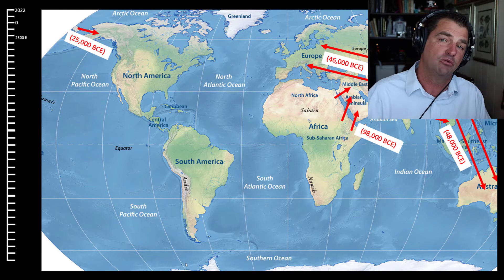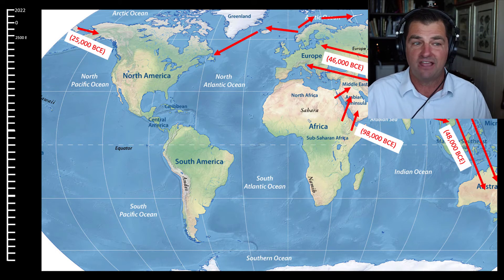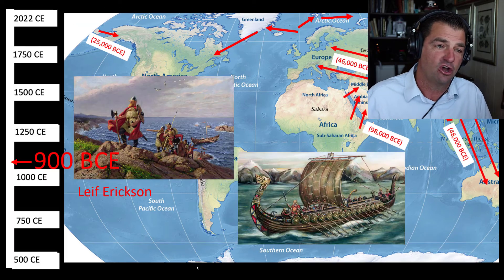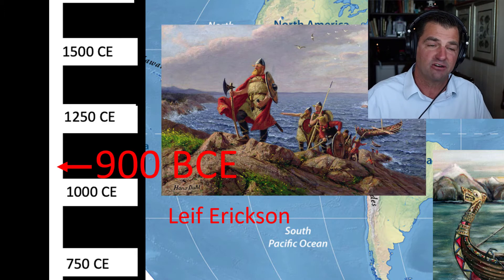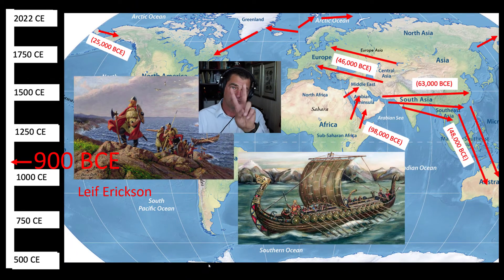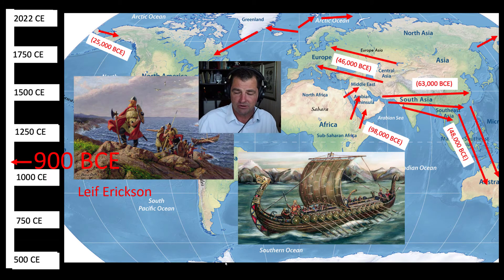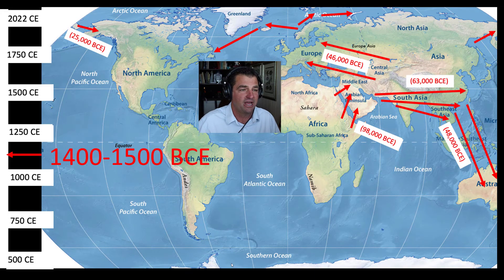The Polynesians reached Hawaii and Easter Island over the next 2,000 years. Around the same time, back in Northern Europe, the Vikings from Scandinavia — modern-day Denmark, Norway, and Sweden — were exploring the North Arctic Ocean. One of the most famous Viking explorers, Leif Erikson, led a group that discovered North America for a second time around 900 CE. Notice again the timeline scale changes as dates compress closer together.